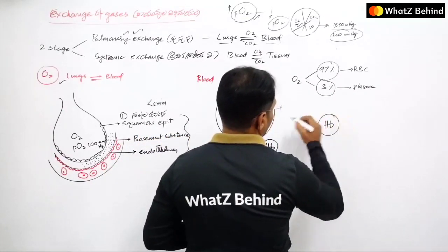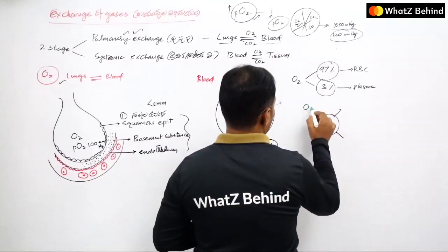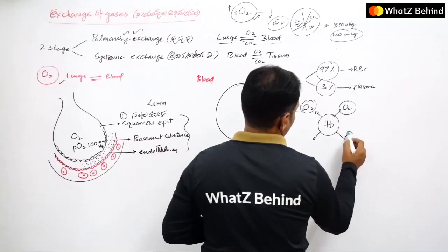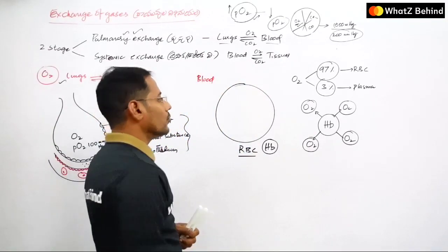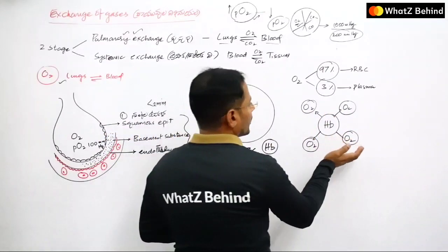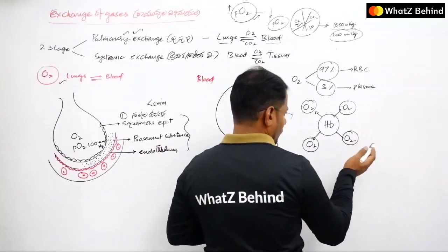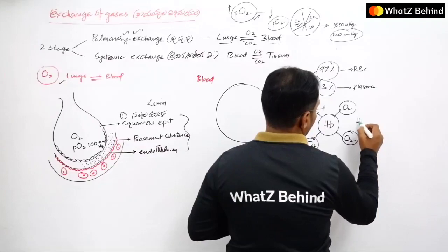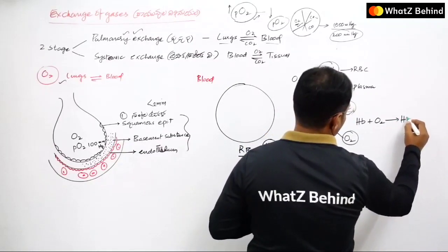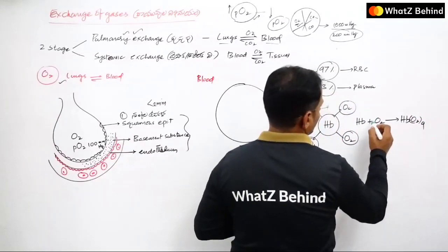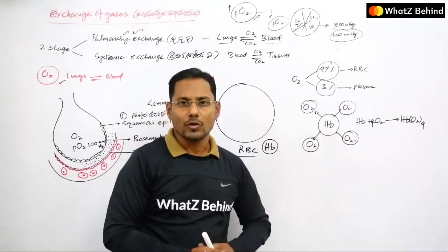Hemoglobin carries four oxygen molecules — it can bind four O2 molecules. So the hemoglobin plus four oxygen molecules forms oxyhemoglobin: Hb + 4O₂ → HbO₂·4. This is called oxygenated blood. So oxyhemoglobin is formed when hemoglobin binds with oxygen in the lungs.